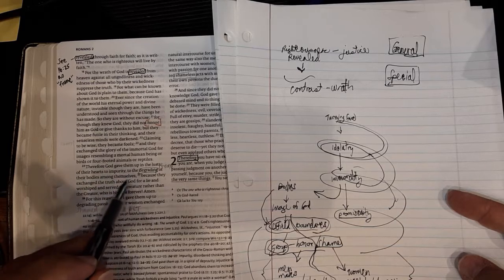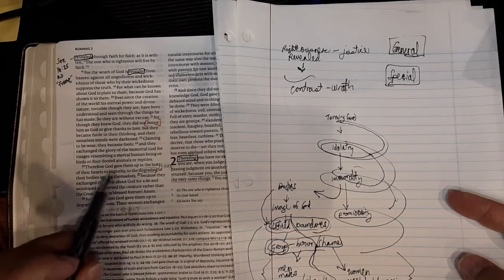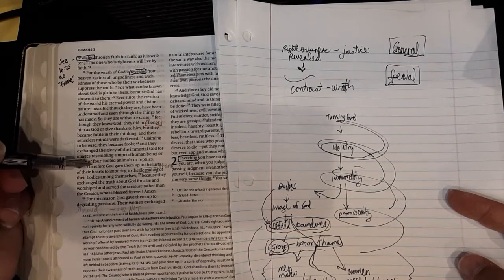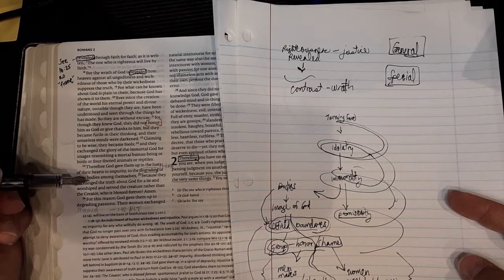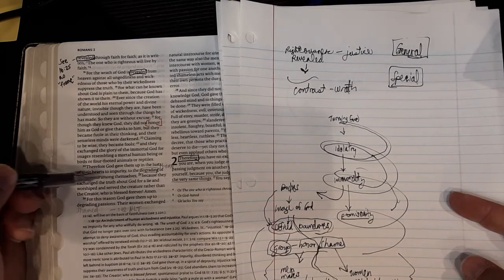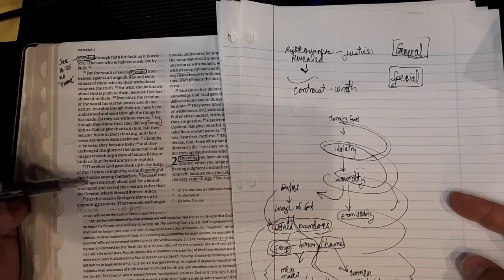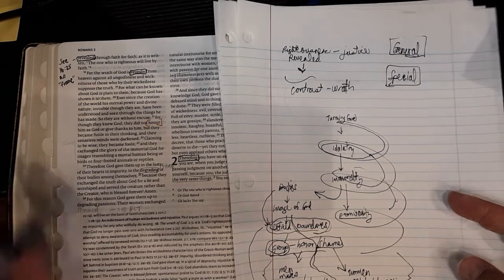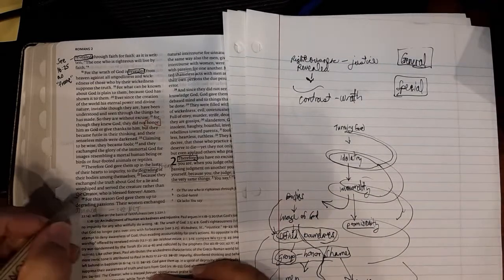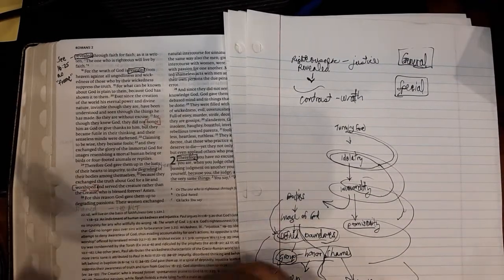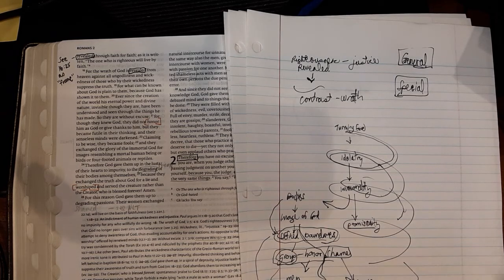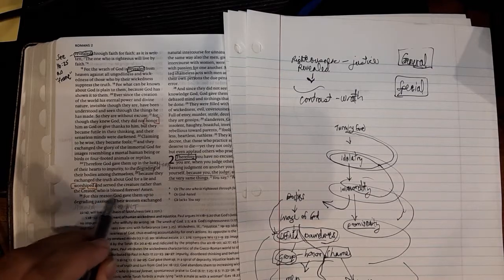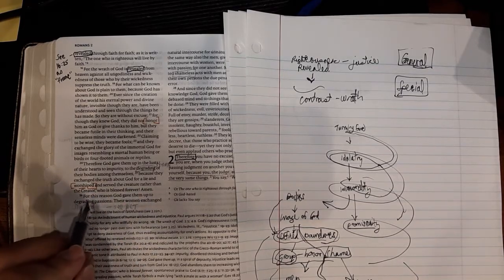Degrading their bodies among themselves. This, by the way, is in terms of worship. The language is here of worship because each step is worship. You don't worship God. You worship yourself. Then you worship idols. And then you worship in a way in which you are bringing impurity through shameful acts with your body. Because they exchanged the truth about God for a lie and worshiped. And that word is important because this is in terms of worship.